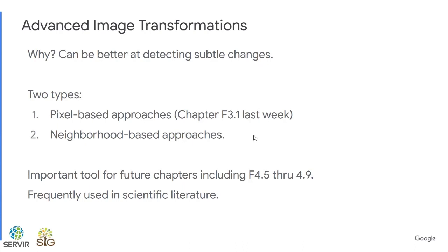As discussed last week, advanced image transformations can be better at detecting subtle changes. Some of the ones we'll talk about today can also help bring to light different information useful for classifications. These pixel-based and neighborhood-based approaches are used extensively in future chapters including F4.5 through F4.9 and in the scientific literature.